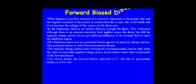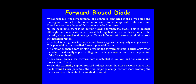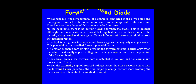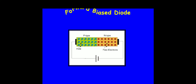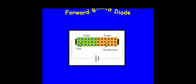Majority charge carriers start crossing the forward potential barrier only when the externally applied voltage exceeds it. For silicon, the forward potential barrier is 0.7V, and for germanium it is 0.3V. Once the forward voltage exceeds the barrier potential, free majority charge carriers cross the junction and contribute to forward diode current. The diode then behaves as a short circuit path, and forward current is limited only by the externally connected resistor.